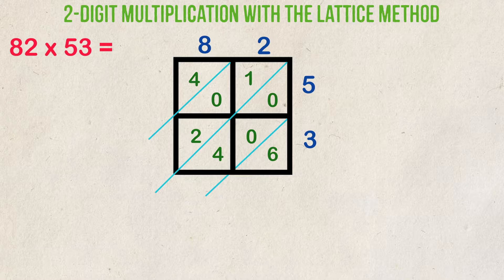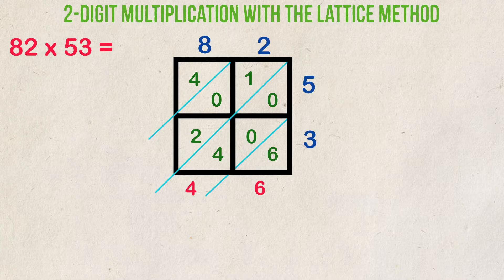Let's start adding them up. The first diagonal section is just 6, so we write down 6. The next section, 4 plus 0 plus 0, which is equal to 4. The next section, 2 plus 0 plus 1, which is 3. And finally, our last diagonal is just 4.